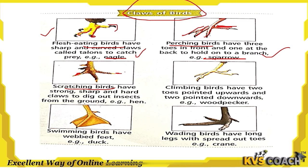Climbing birds have two toes pointed upward and two pointed downward. An example is the woodpecker. Swimming birds have webbed feet, like the duck, so that they can swim easily.